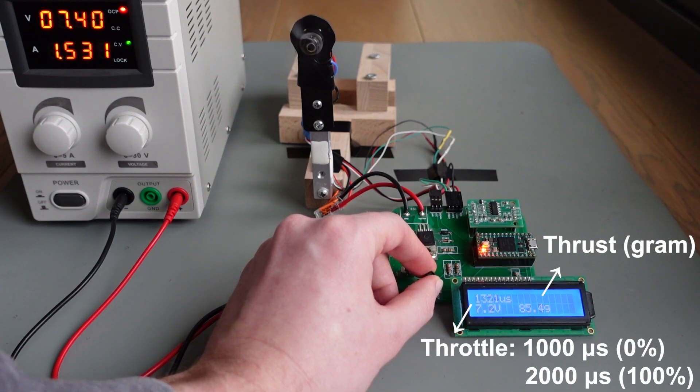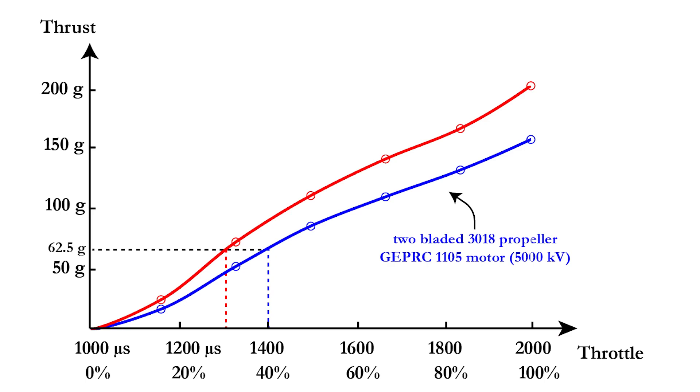Doing the same measurements at different power levels allows you to create the graph like the one in blue on the screen, where you can evaluate the motor thrust in function of the throttle. When you would test another motor and propeller combination, such as the 1206 motor with a 3-bladed 3-inch propeller, you will get a different graph with higher thrust. The main reason for this higher thrust is the fact that you use a 3-bladed propeller.